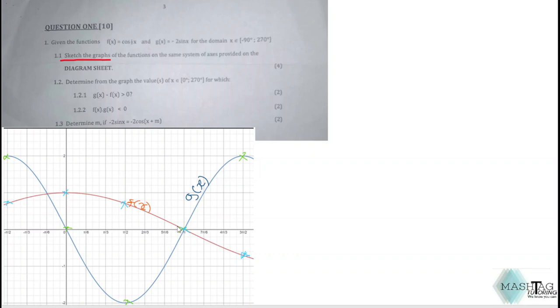Moving on to question 1.2, they are requiring you to determine from the graph the values of x between 0 and 270° for which certain conditions are met. They gave you this range for x, that means you are dealing with from 0 all the way to 270. So we're only focusing on this part, not the negative side.